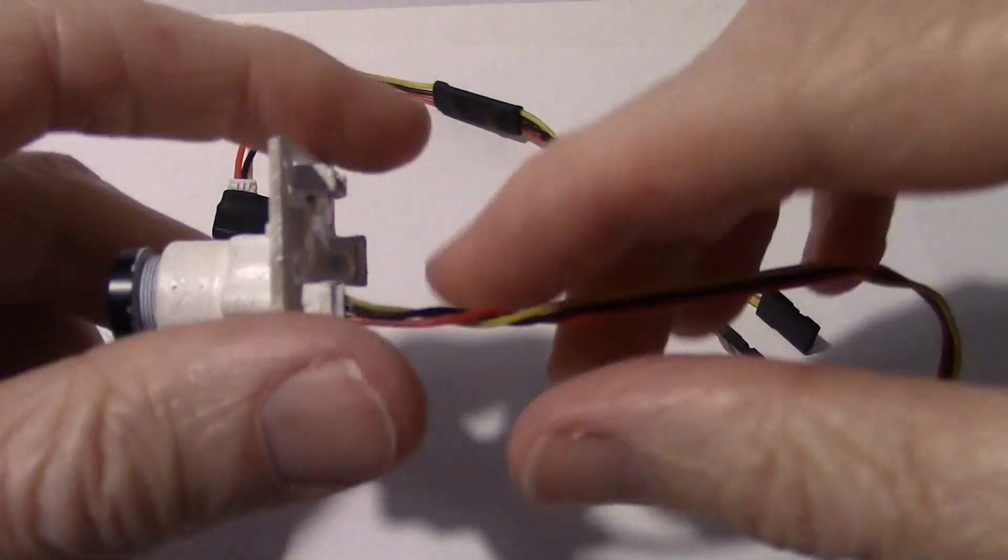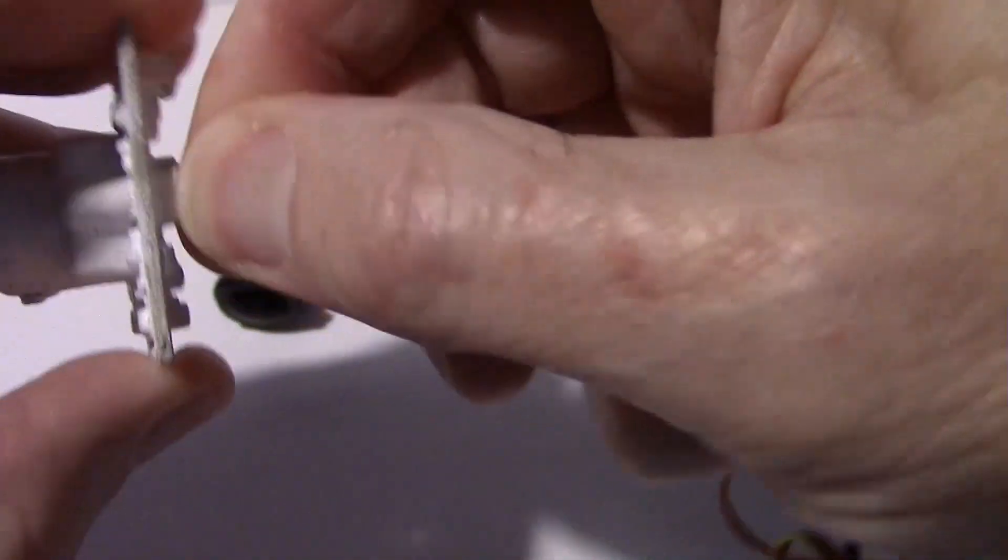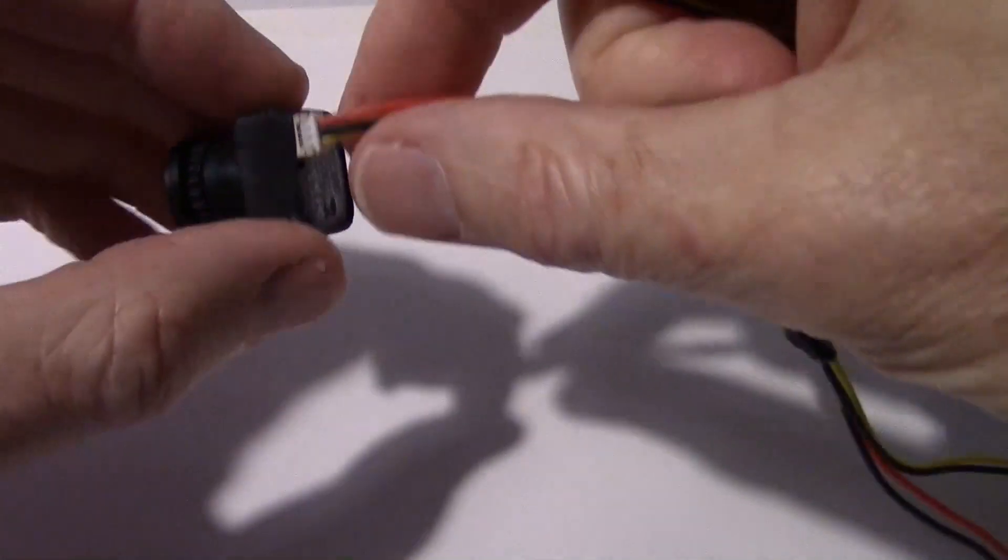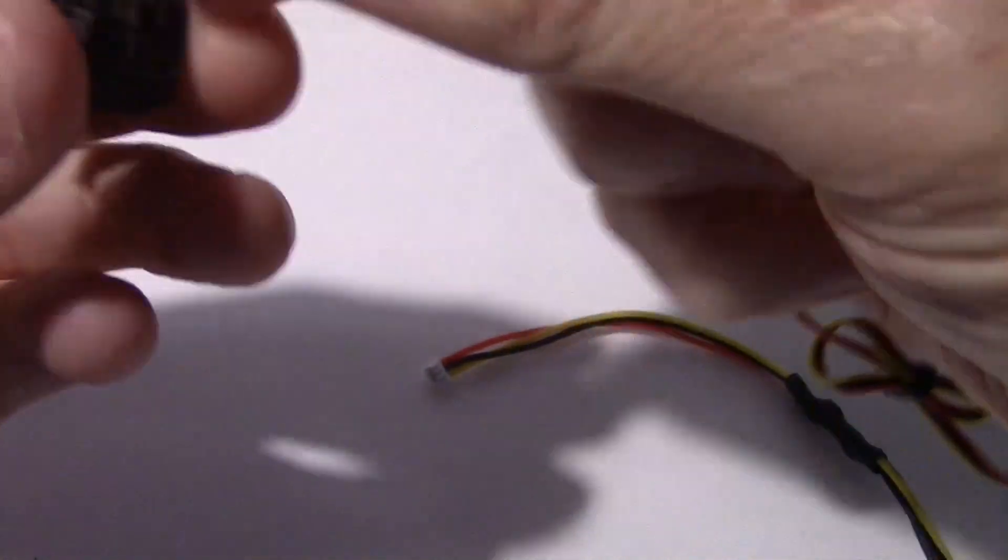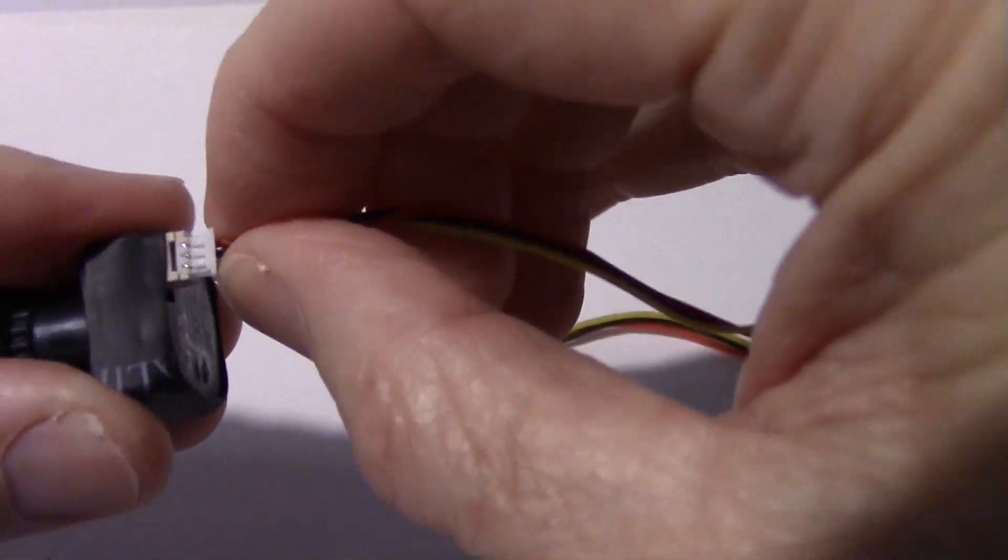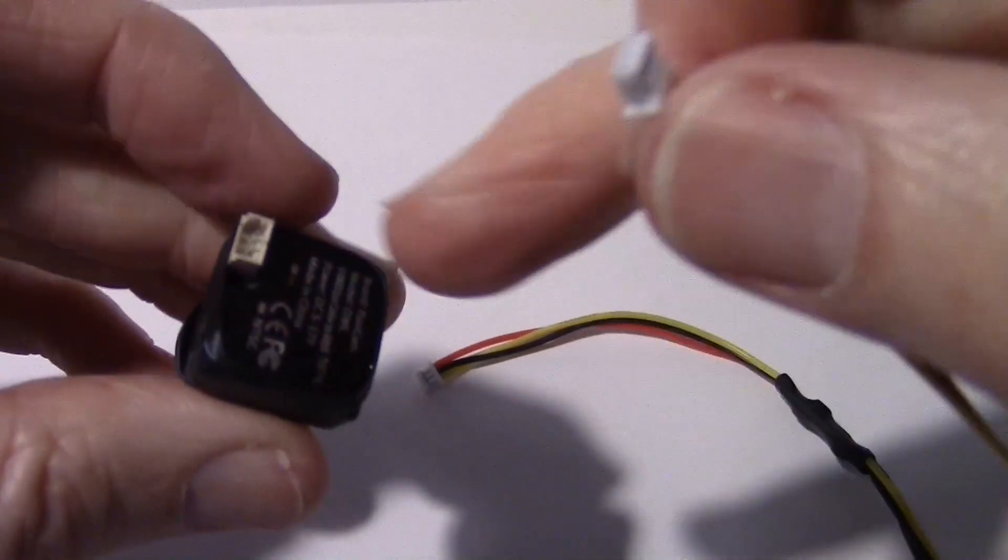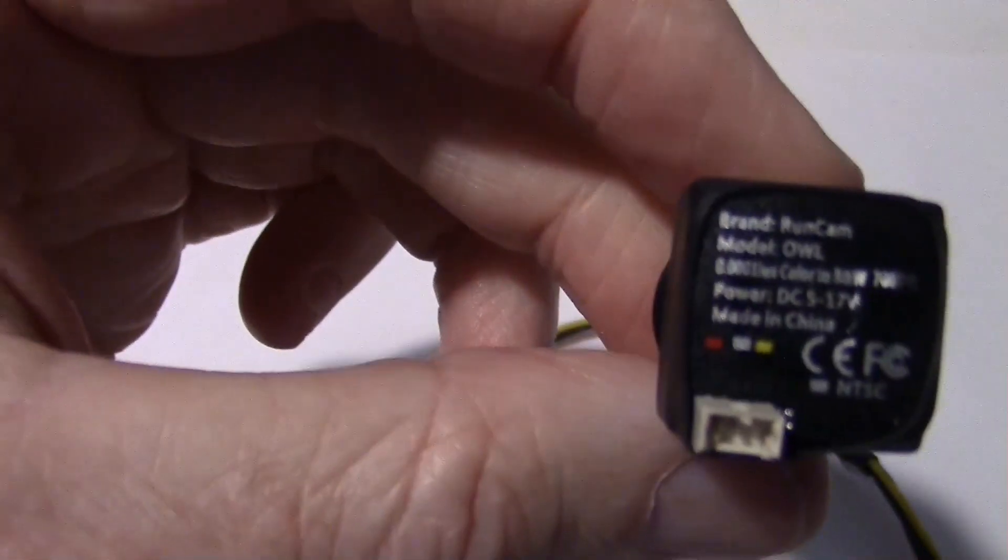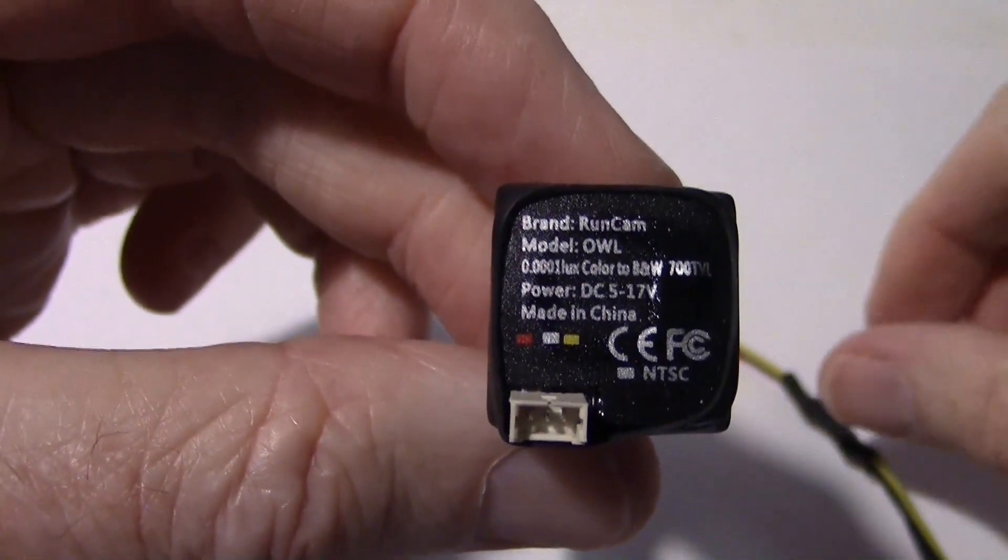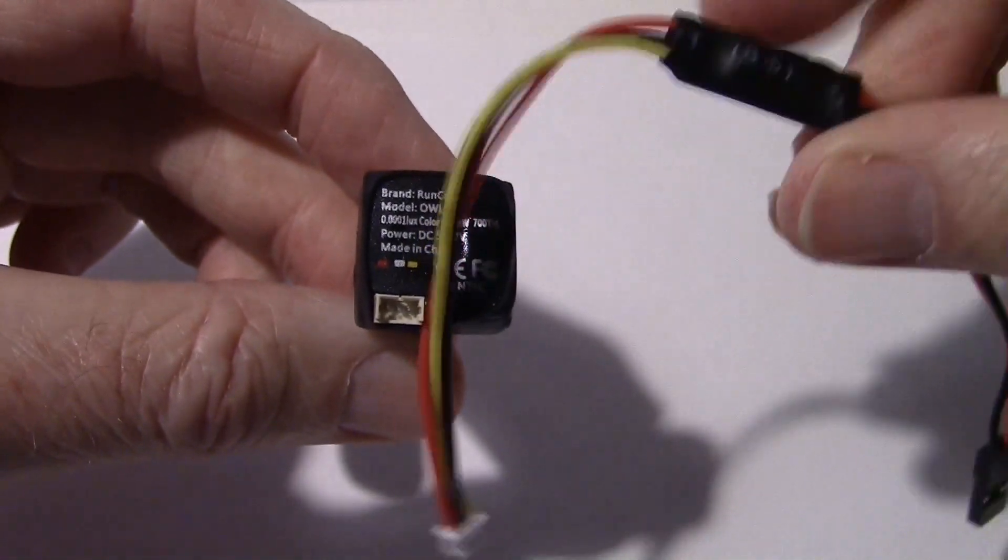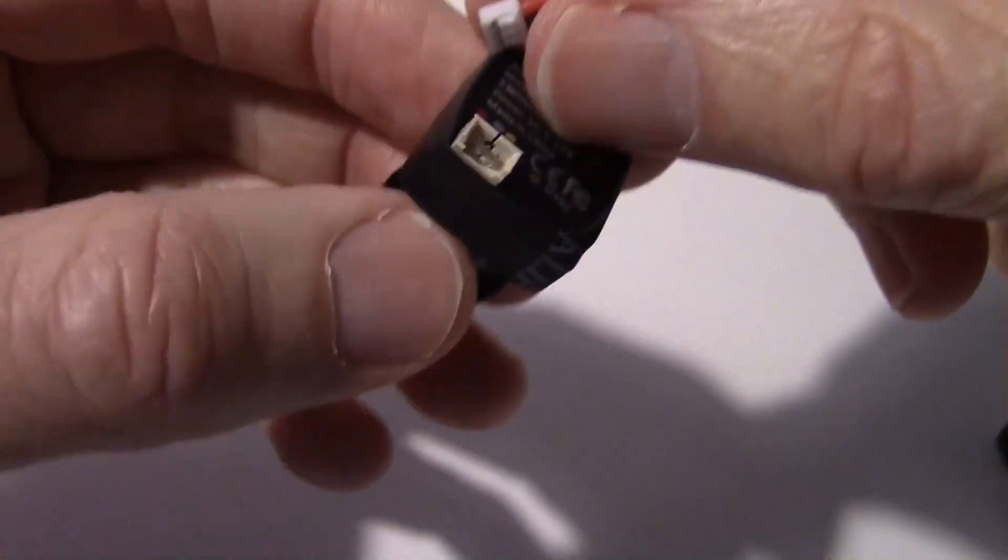The first question I had was could I take the wire off my PZ0420 board cam and plug it into this camera. But that wouldn't be good because this supplies 12 volts on the red wire and that would burn this camera out. Even though this camera says 5 to 17 volts on the back, it actually can only handle 3.3 volts and you need the provided regulator. Don't just plug it onto your ordinary board camera wire or you'll burn it up.